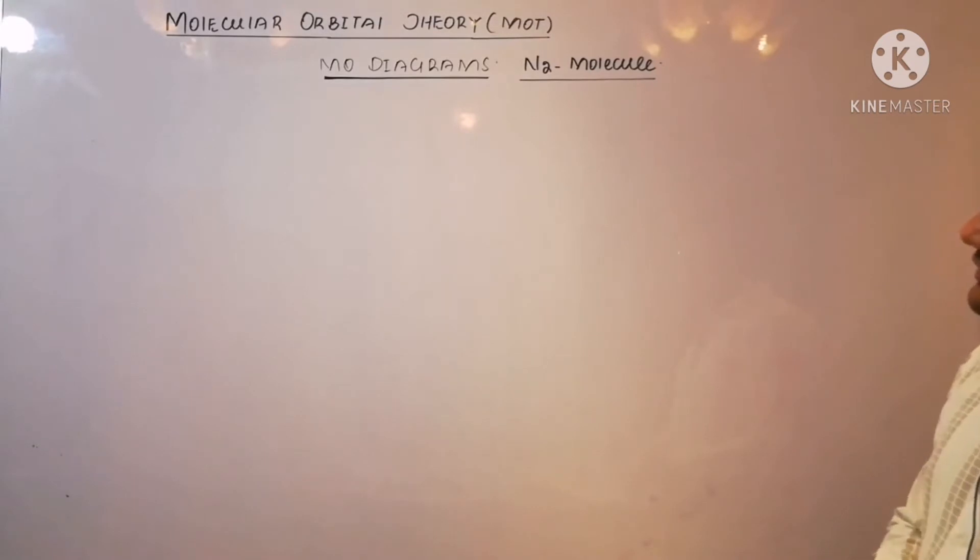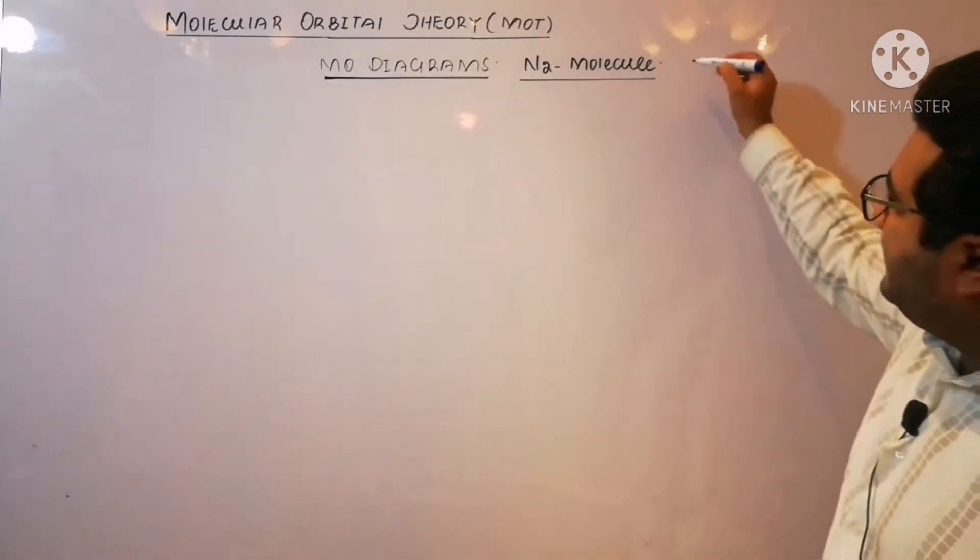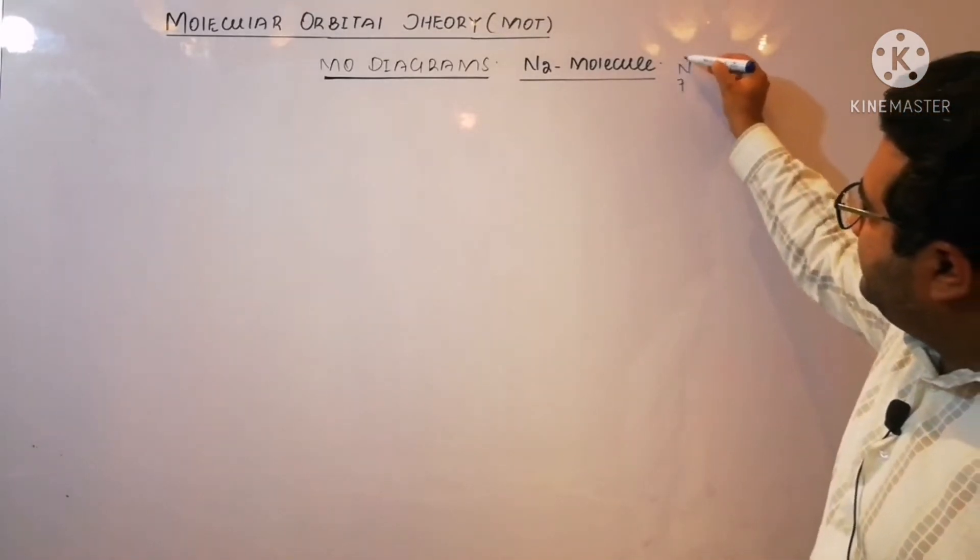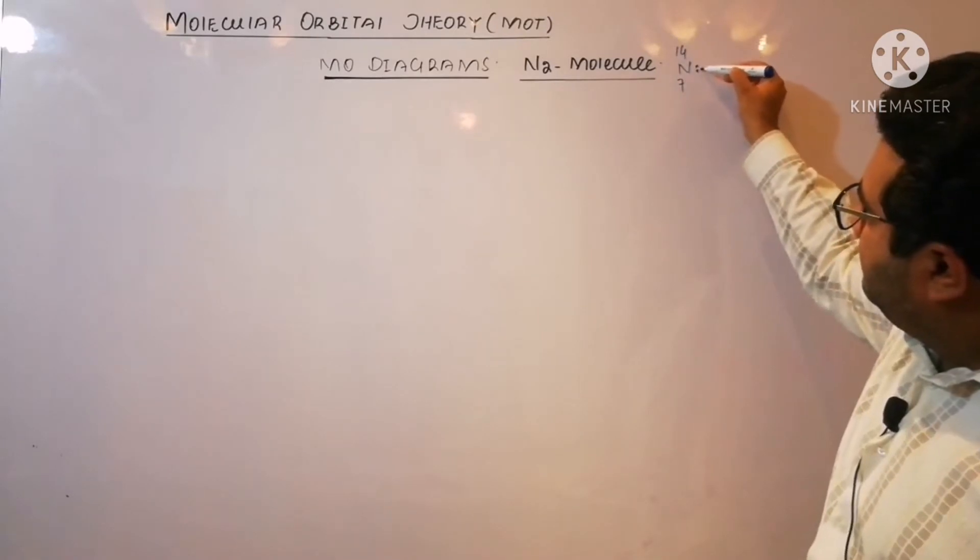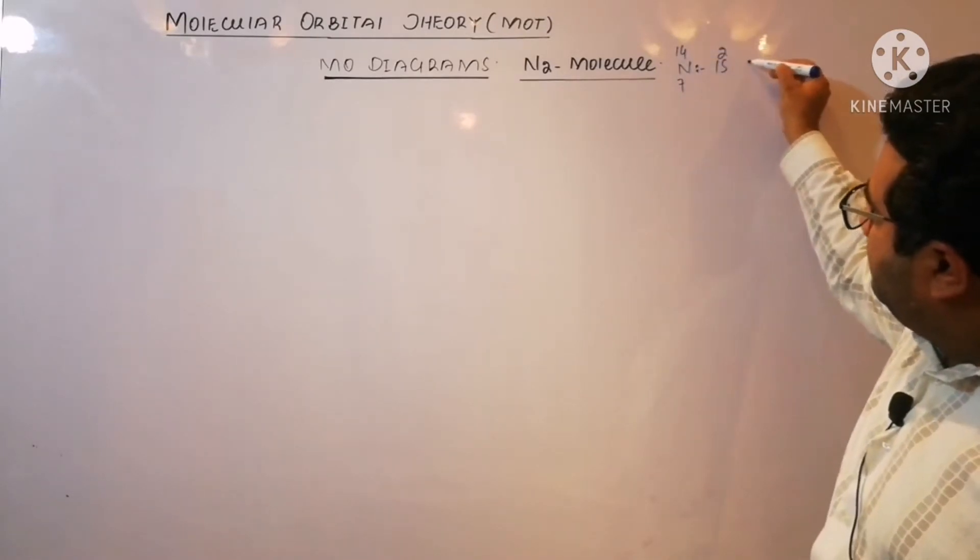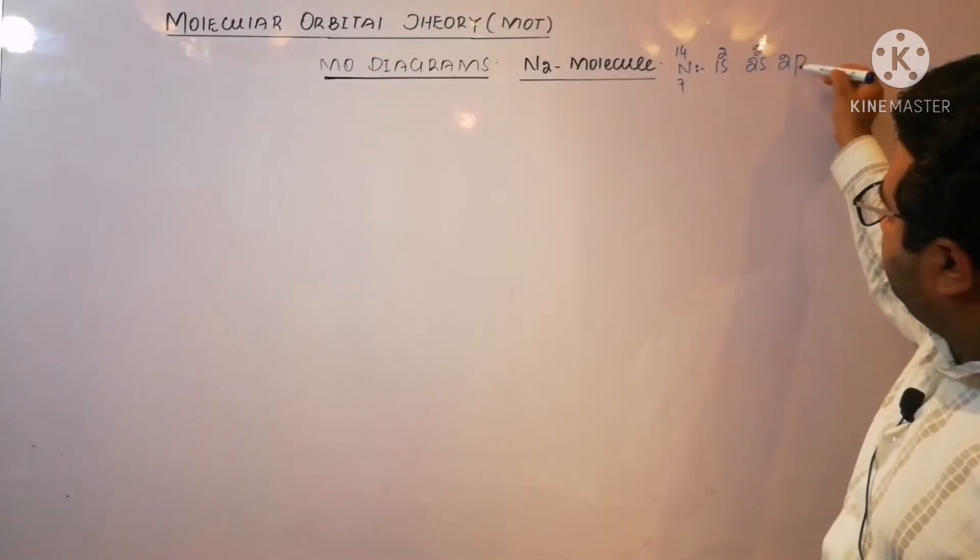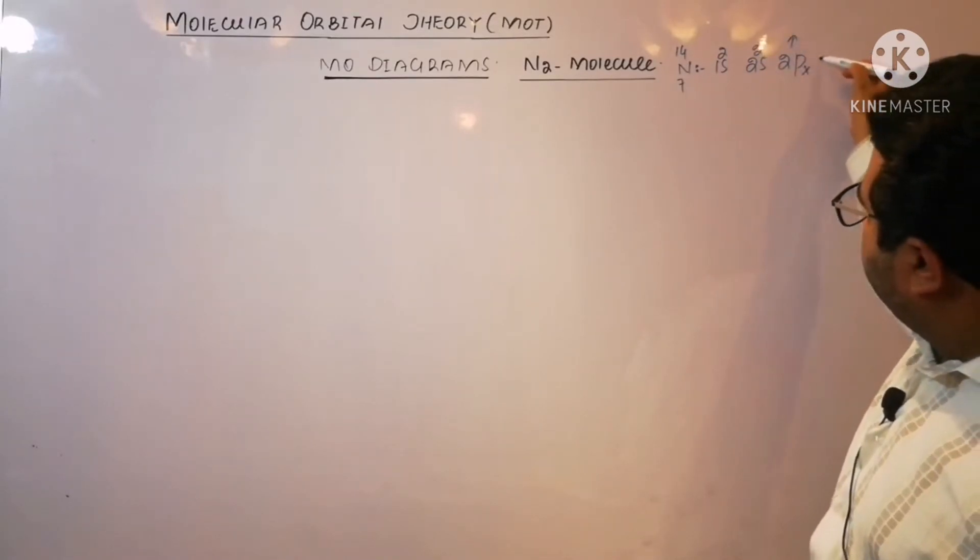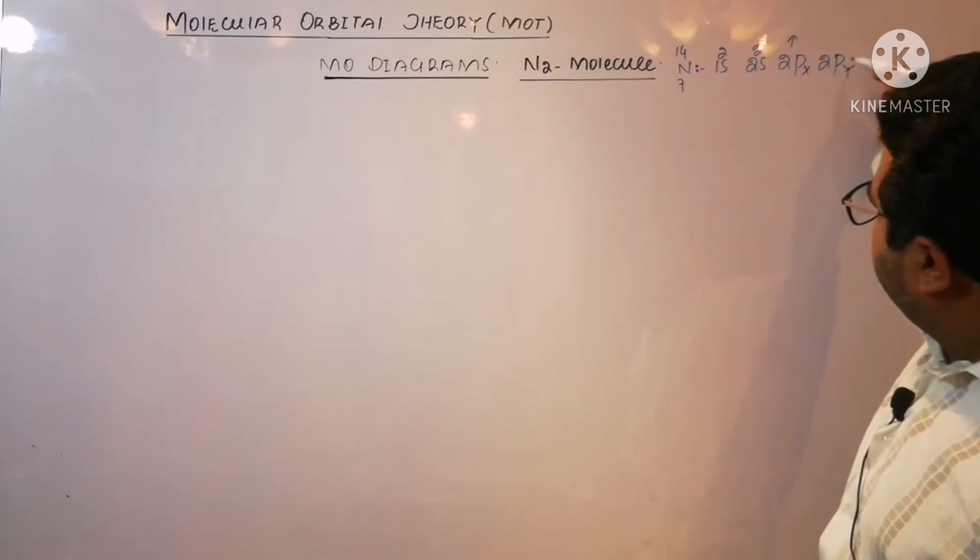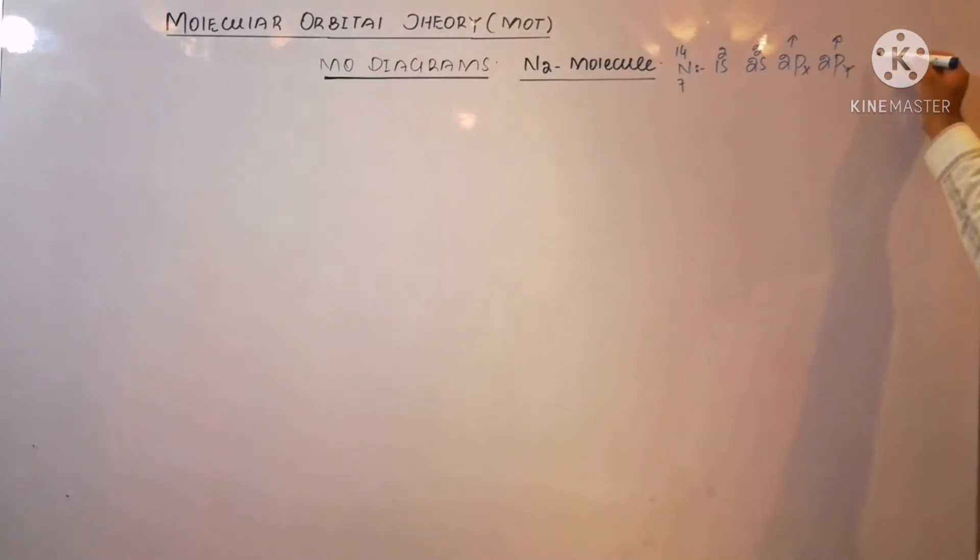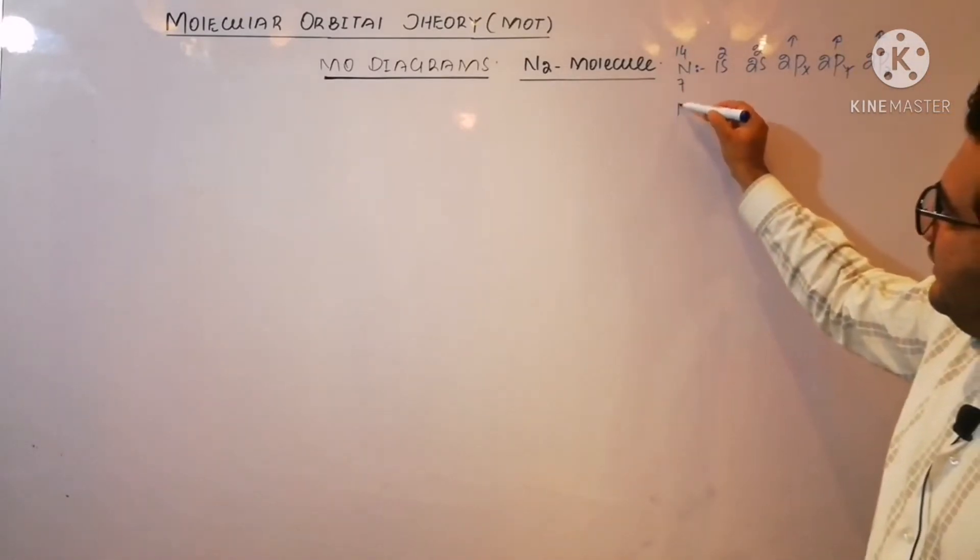There must be two nitrogen atoms, so first of all let us write down their electronic configuration. The second nitrogen atom.